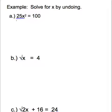So the first thing we want to do is divide both sides by 25. So we're left with x squared on the left, and 100 divided by 25 is 4.